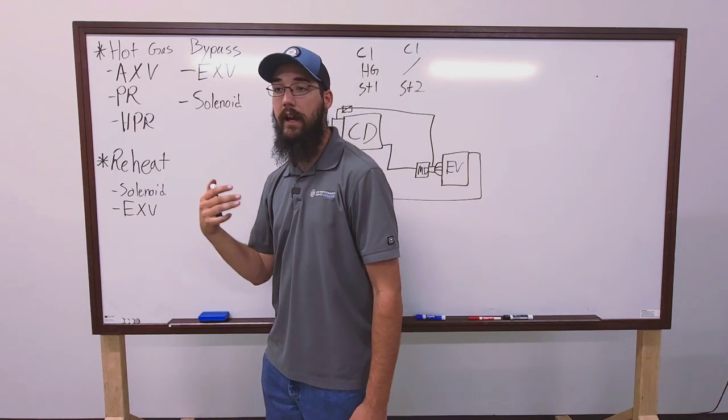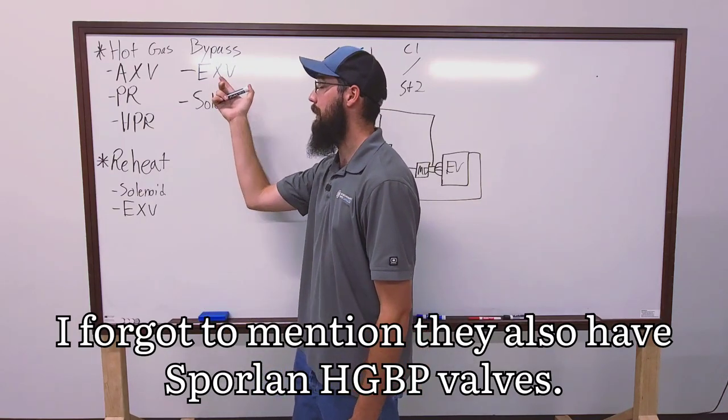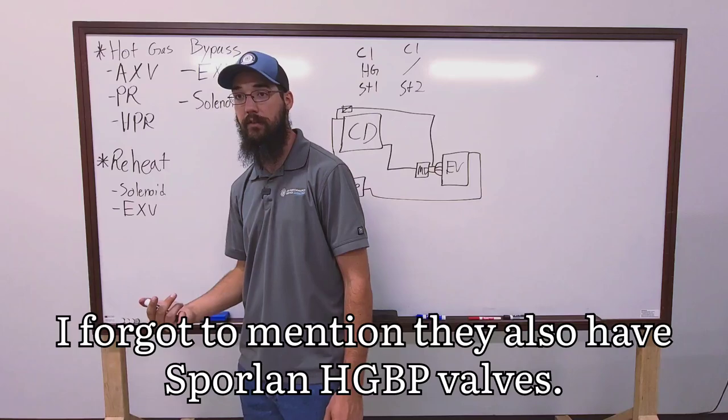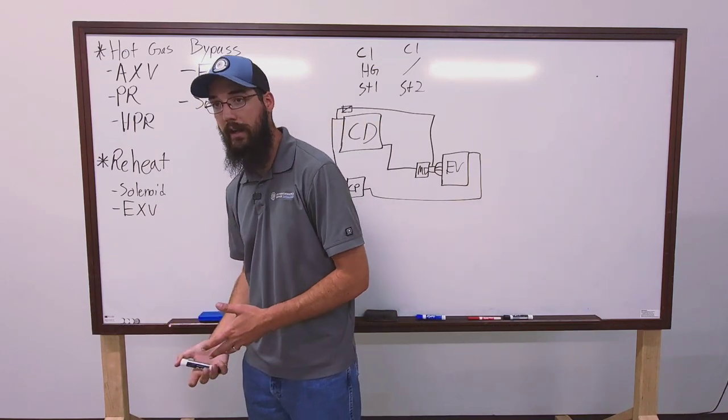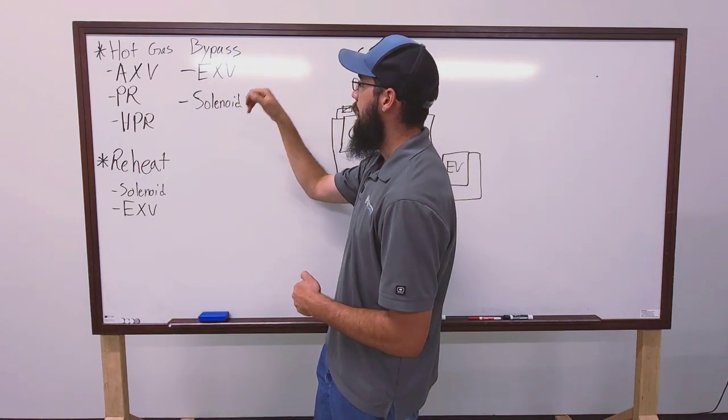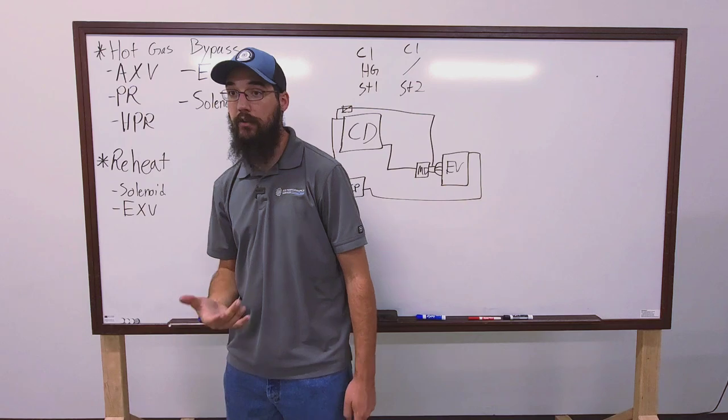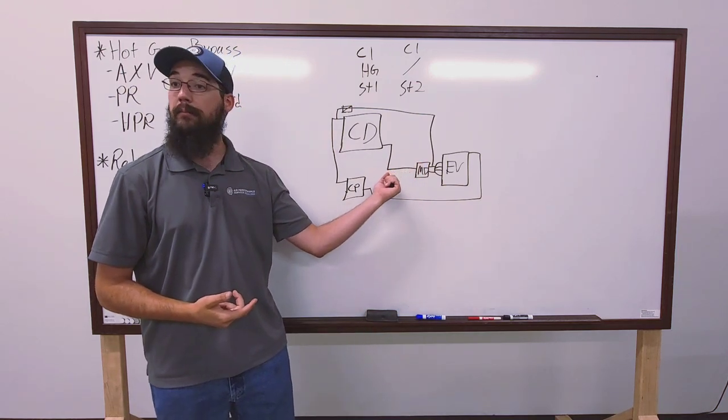So, Aon and the Daikin Rebel systems, the outside air units, are real big on using EXVs for the hot gas bypass side of the system. EXVs are also real popular on the reheat side as well. So, you can see either way. We'll get into the reheat. And you can also have solenoids. Trane is big on using solenoids.